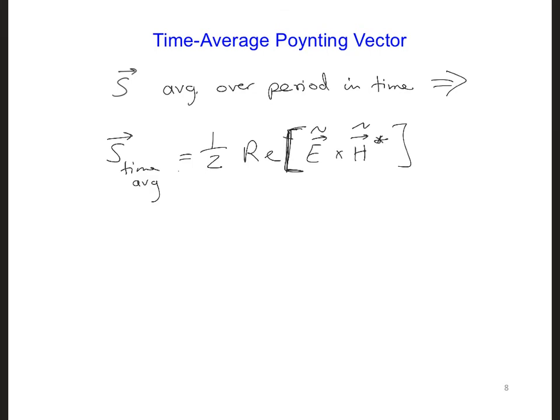You can compare this with your circuits class result for the time averaged power dissipated by a circuit impedance in the sinusoidal steady state. And for that, we had S time average is one half the real part of V, I, complex conjugate. Or you could write it as real part V RMS, I complex conjugate RMS.